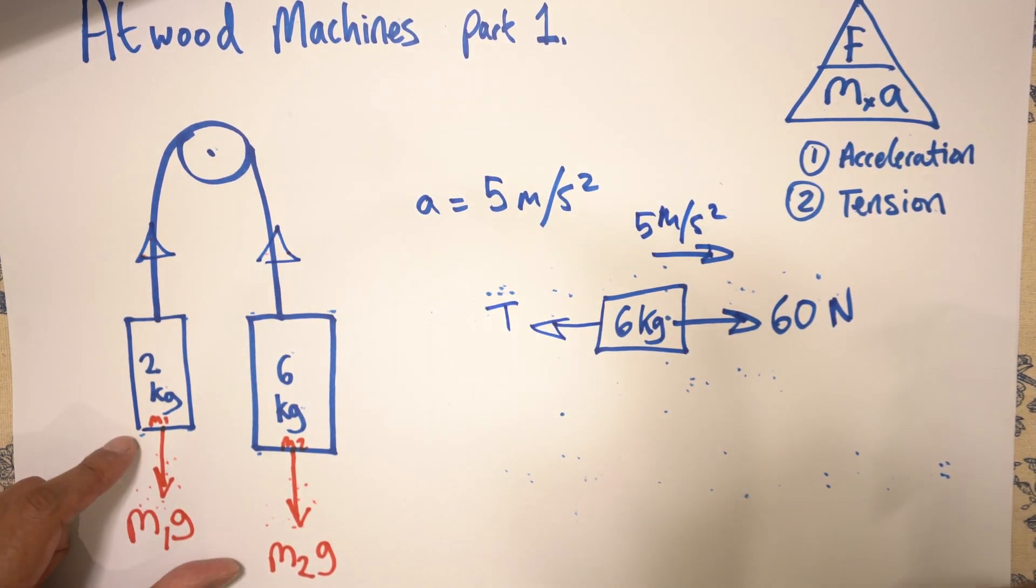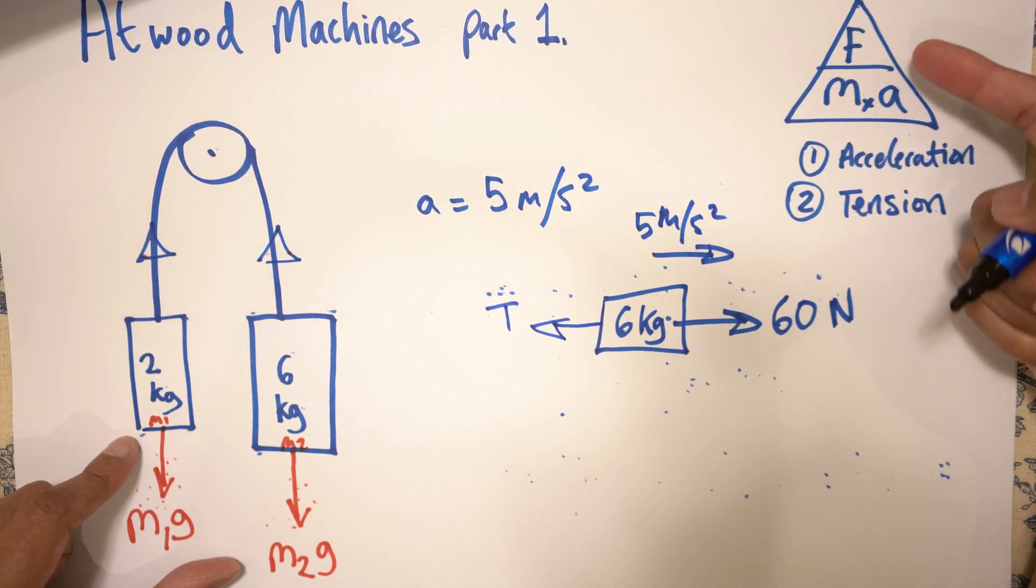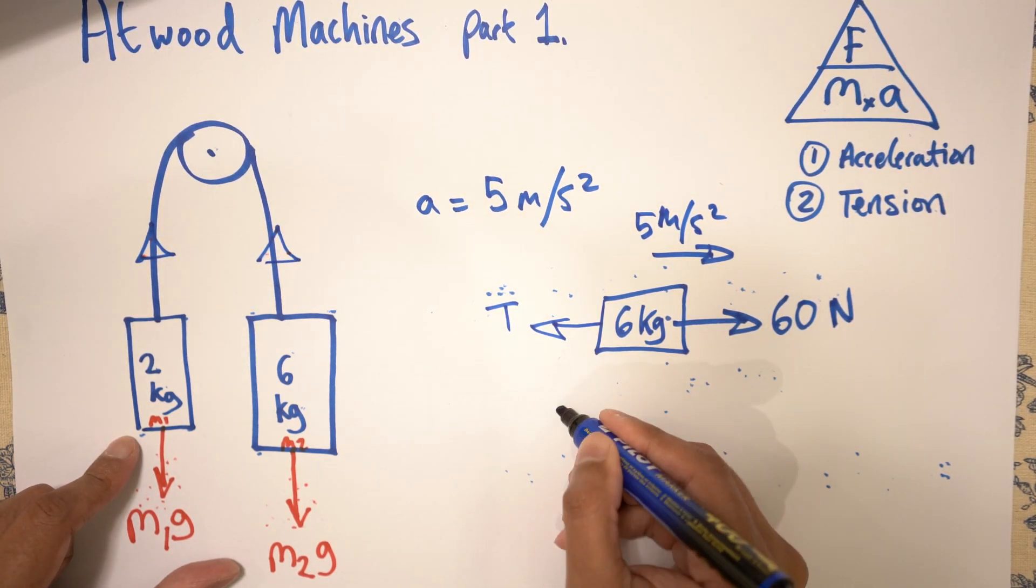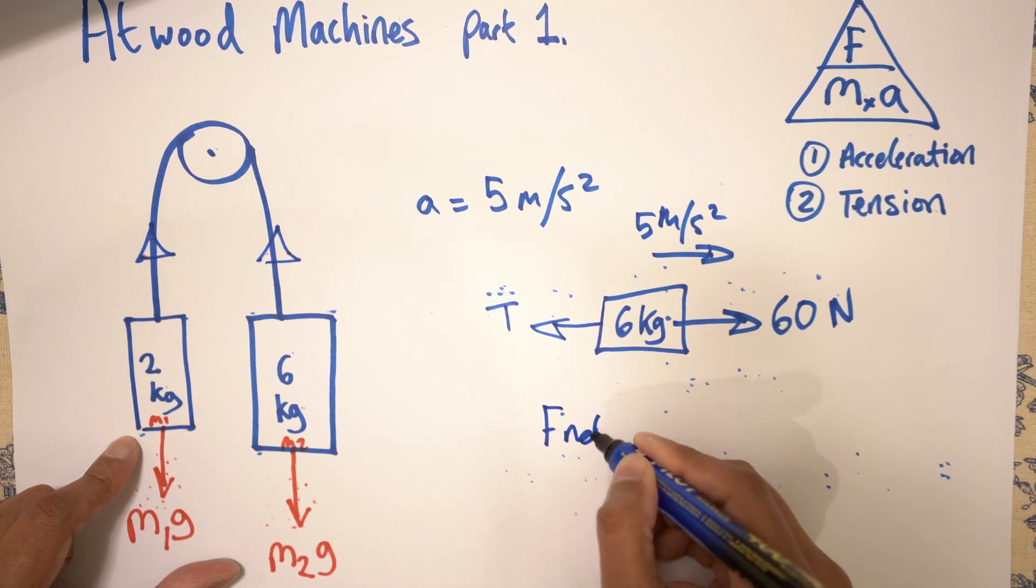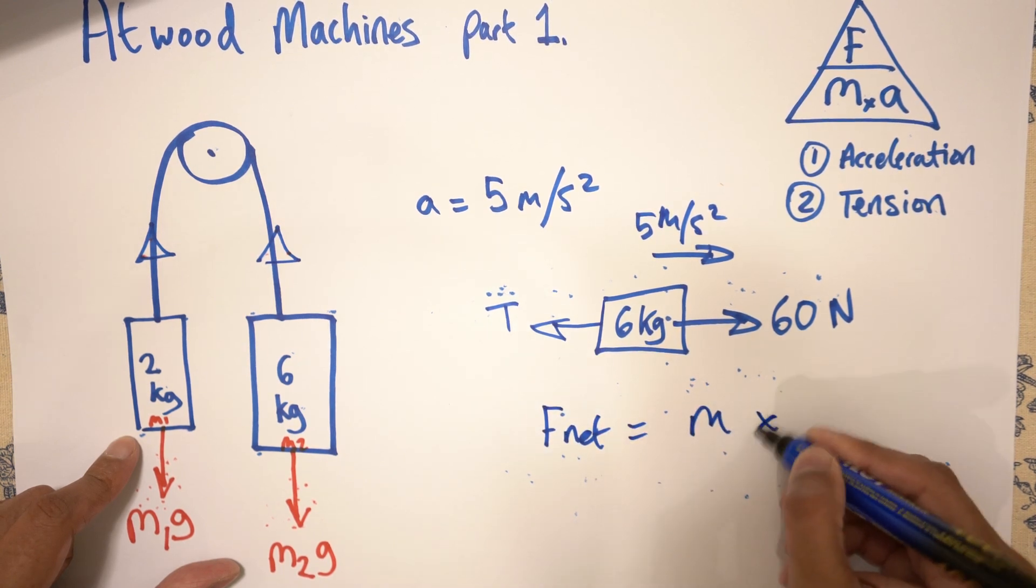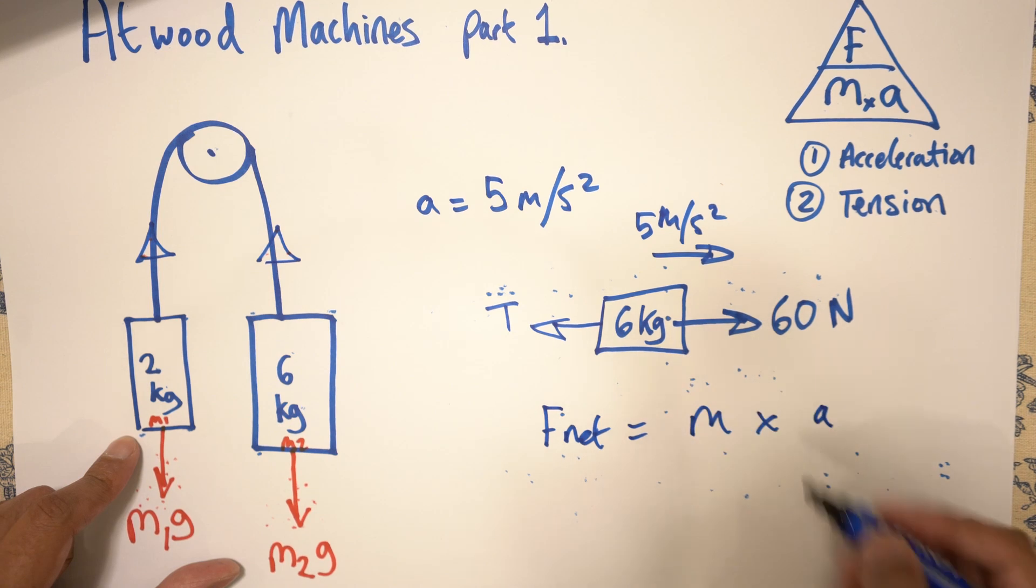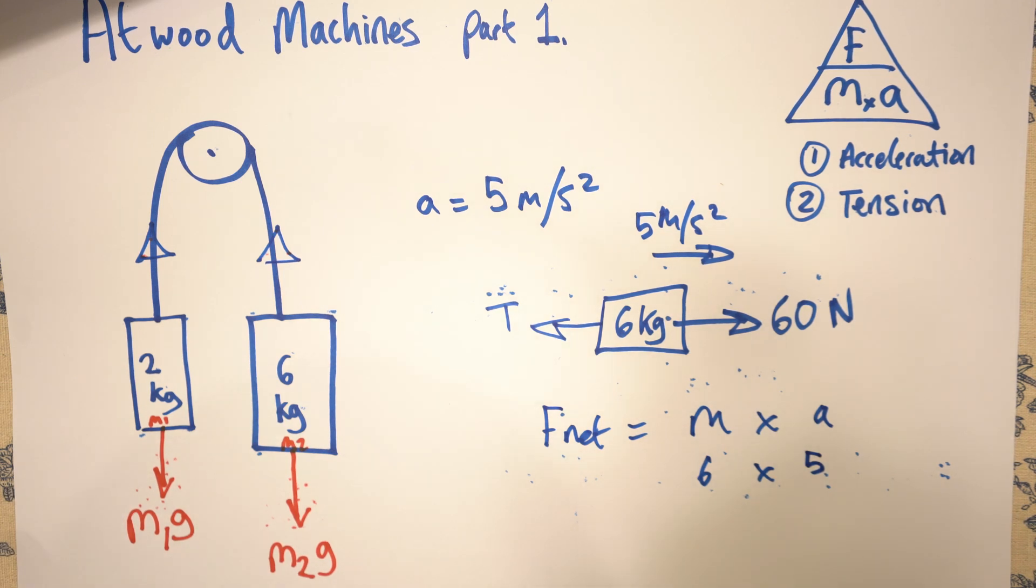So what we've got to do is we've got to use this equation again. F net is mass times acceleration. F net equals mass times acceleration. The mass is 6. The acceleration is 5. 6 times 5 is 30.